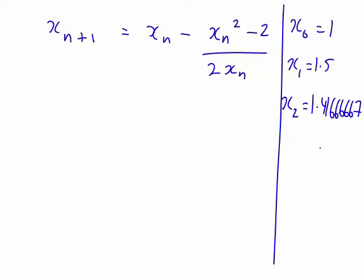Let's continue on with x₃ and see what happens. Now, x₃, that's going to be the previous one, x₂ that we just worked out, minus x₂² - 2, divided by 2 times x₂.